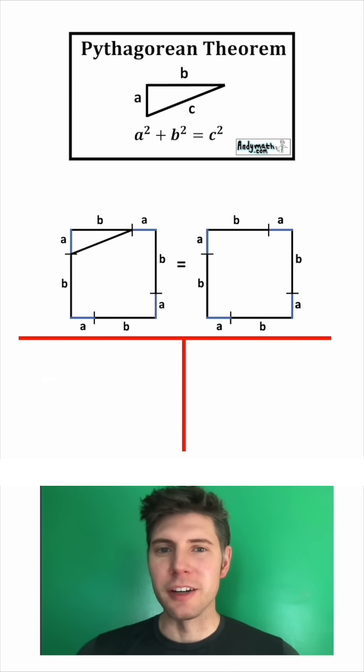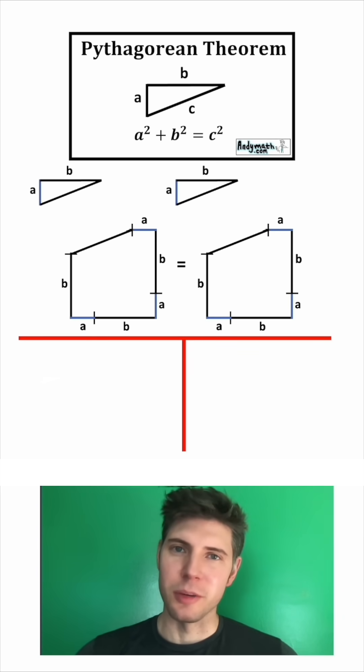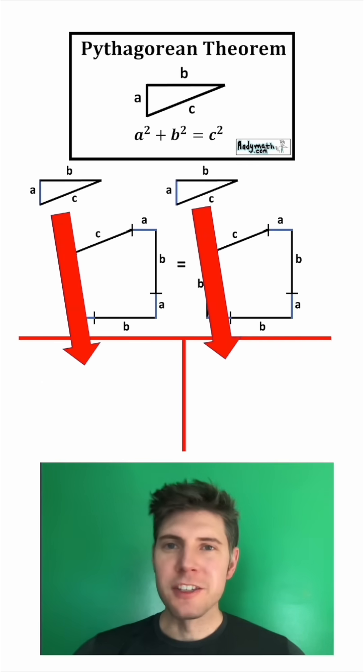Then if I make a cut right here on both squares and pull this triangle out, this is the same triangle that's in our notes up above. So this side right here is C, this side is also C. And let's bring these down here.